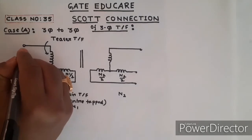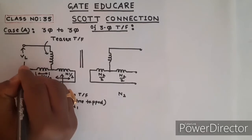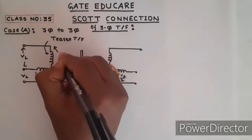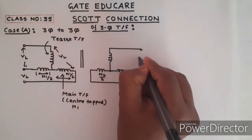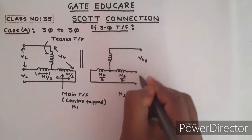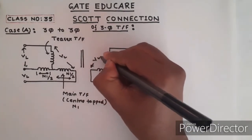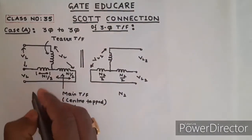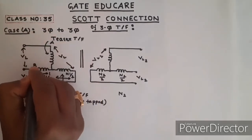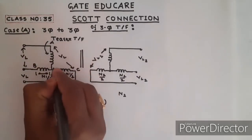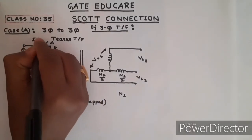Let the primary line voltage be VL, appearing across each primary winding. The secondary line voltage is VL2. The labeled points on the primary are A, B, C, and D, and the primary line current is IL.